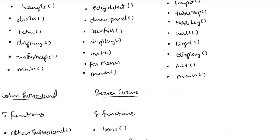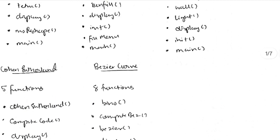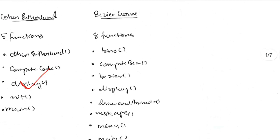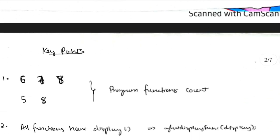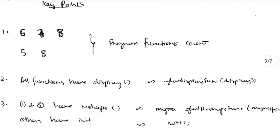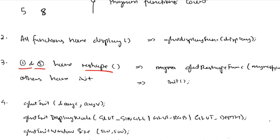Those are three functions common to all programs. After that, there are specific functions unique to each. Also, two programs have a menu function: the Scanline Fill algorithm has a fill menu, and the ninth program (Bezier Curve) also has a menu. So to summarize the key points: Sierpinski Gasket has 6 functions, Scanline has 7, Teapot has 8, Cohen-Sutherland has 5, Bezier Curve has 8. Programs 1 and 5 have reshape; the others have init.